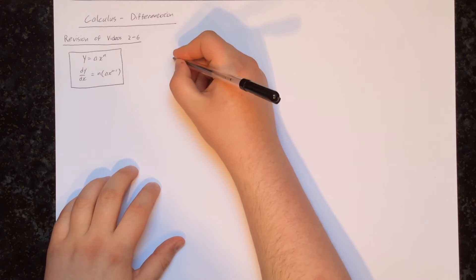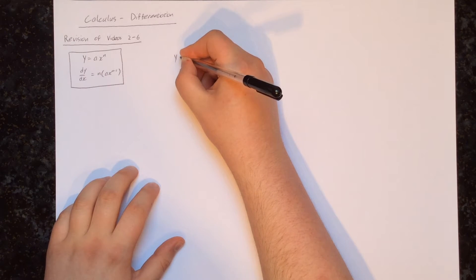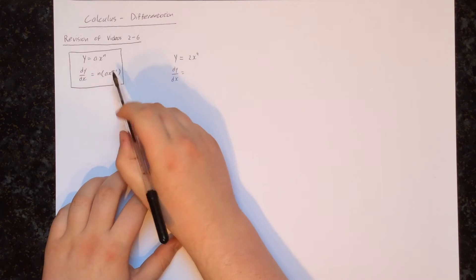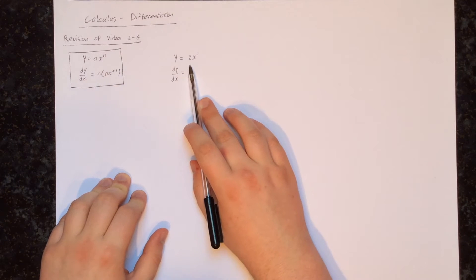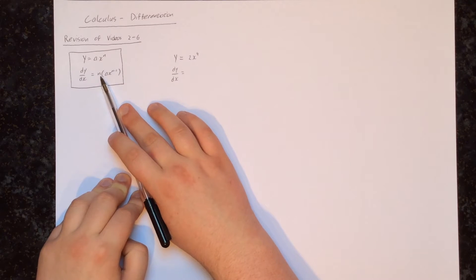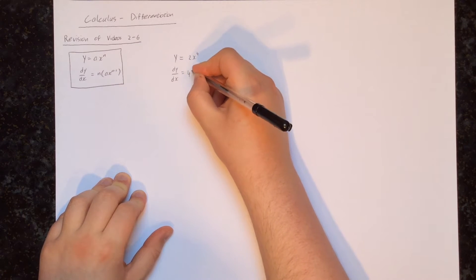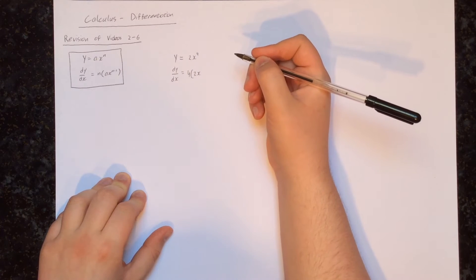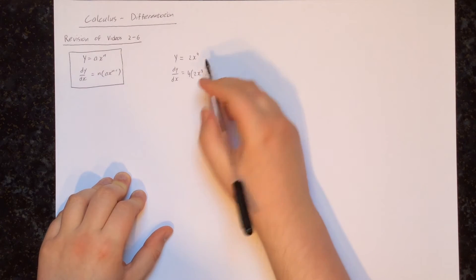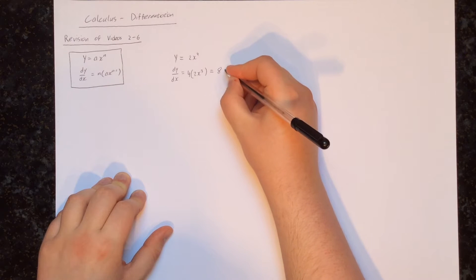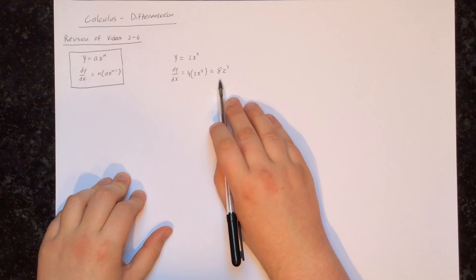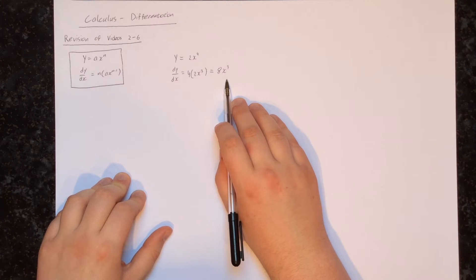Let's find the derivative of y equals 2x to the power of 4. This is done directly by using this formula. We have some number — in this case 2 — of x's to some power — in this case 4. So to find the derivative we multiply by the power, which is 4, and then reduce the power by 1 down to 3. We can then simplify: 4 times 2 is 8, so we get 8x to the power of 3.